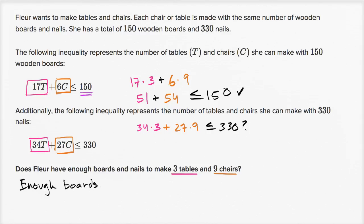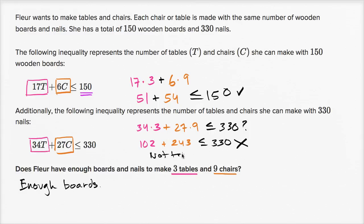So 34 times three is 90 plus 12, which is 102. And 27 times nine is 243. So it's 102 plus 243. Is that less than or equal to 330? That adds up to 345. This is not less than or equal to 330 — that's not true. So she does not have enough nails. She has enough boards but not enough nails, so unless she goes and buys some nails, she's not going to be able to make these tables and chairs.